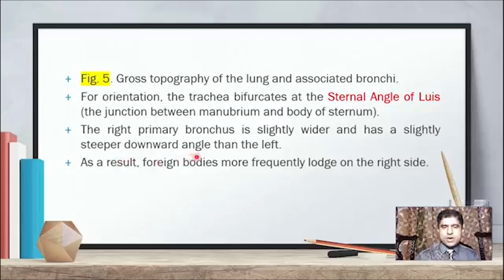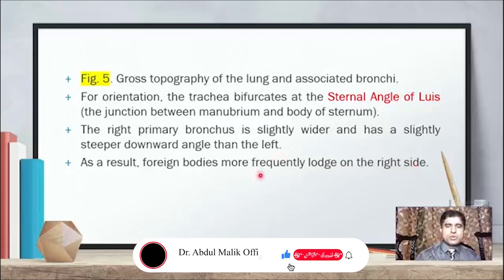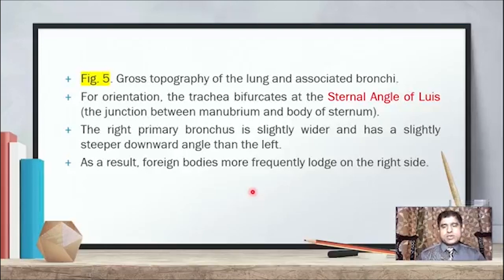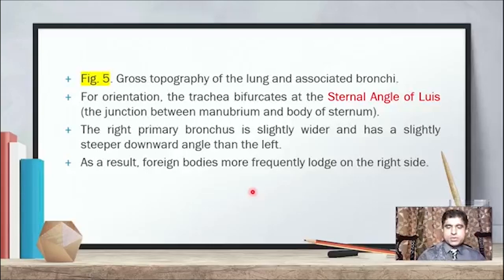As a result, foreign bodies more frequently land on the right side. The left lung is protected because the heart is present on the left side, very close to the left lung. So Allah made the right side wider and larger; whatever foreign body enters tends to go into the right bronchus, not the left, because if the left lung had a problem, it could affect the heart too since they are so closely attached.